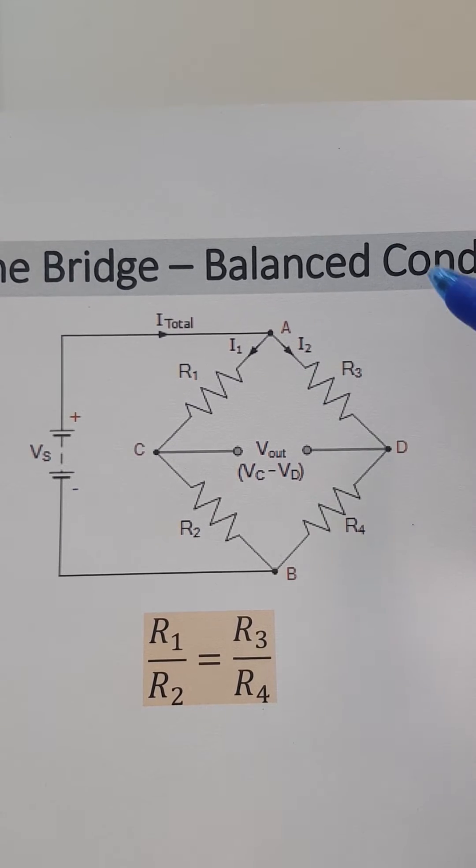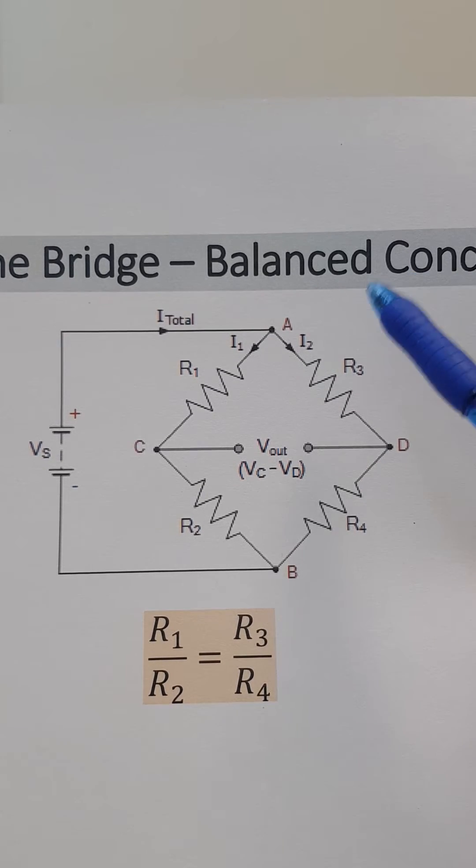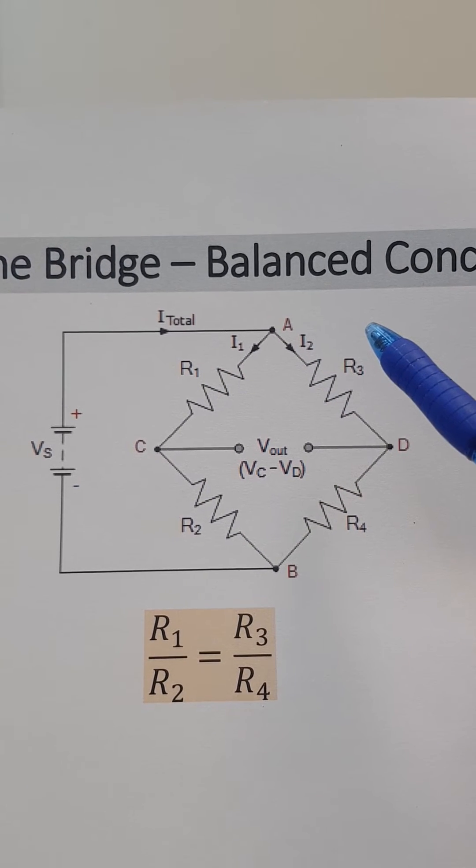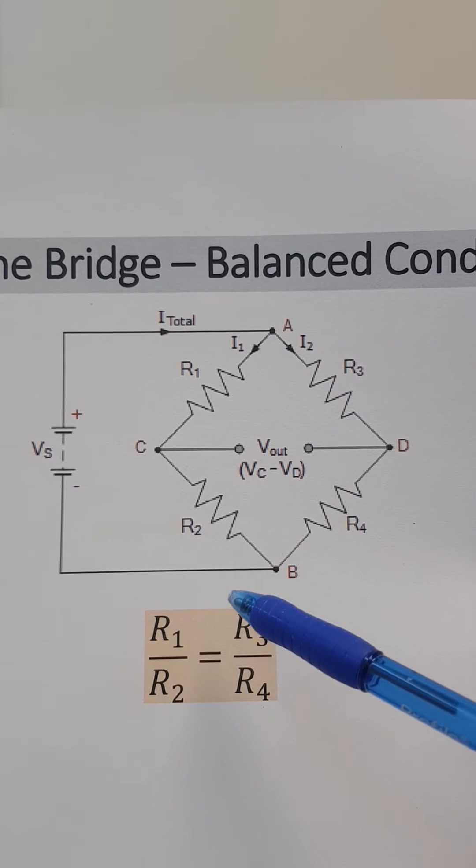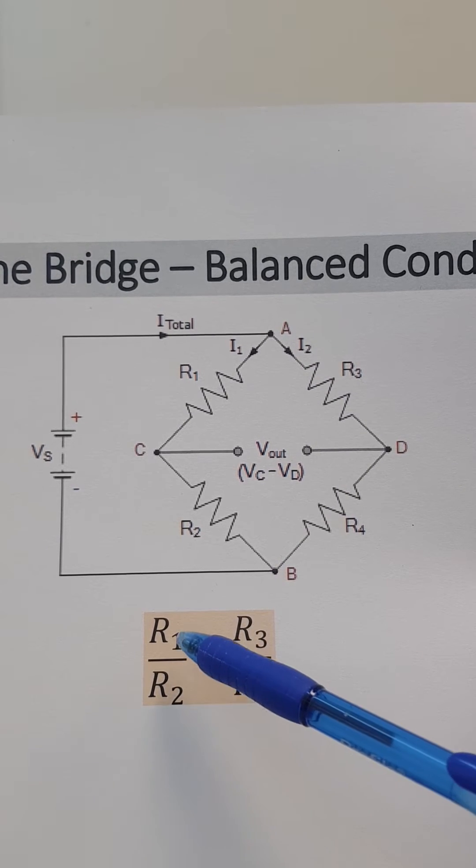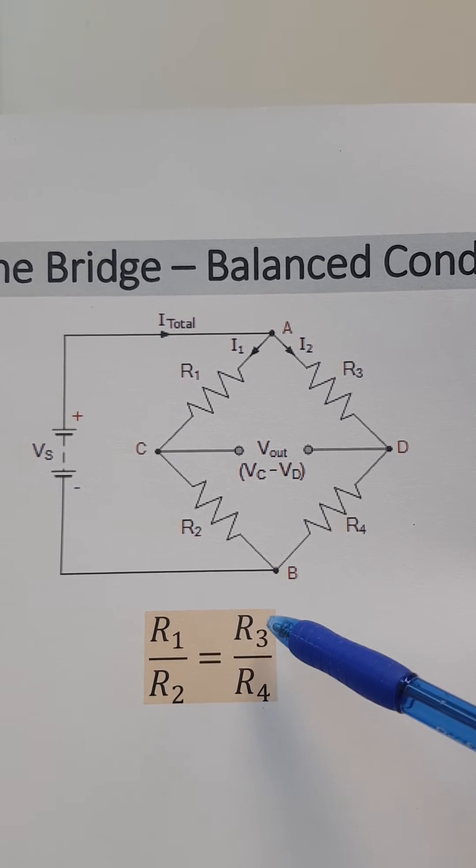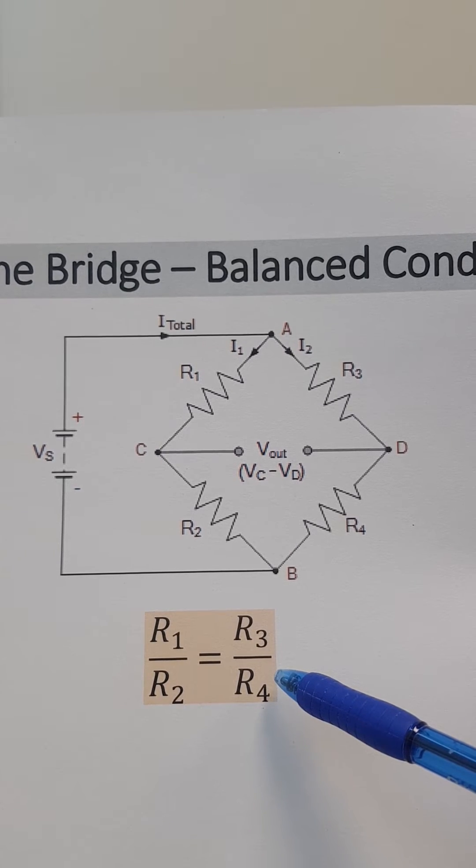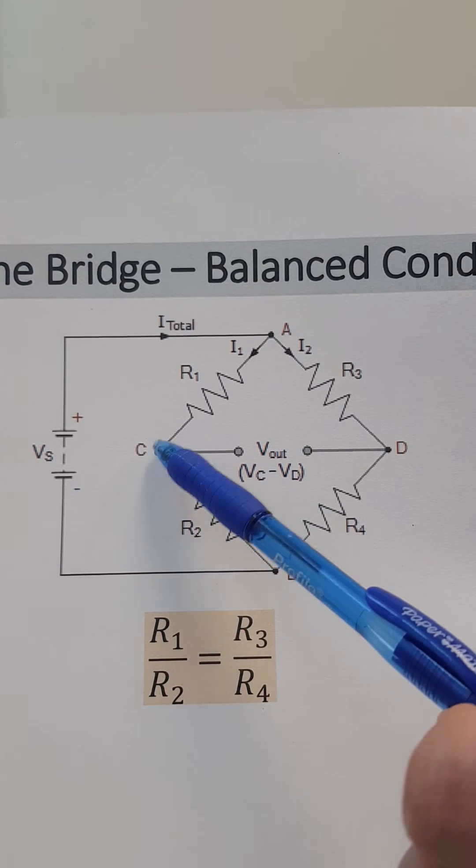There is another mode we'll come to in the next video, which is the unbalanced mode when the resistors are changing their values. Now, how we can go from this if R1 over R2 equal to R3 over R4, this will lead to the voltage equal to zero.